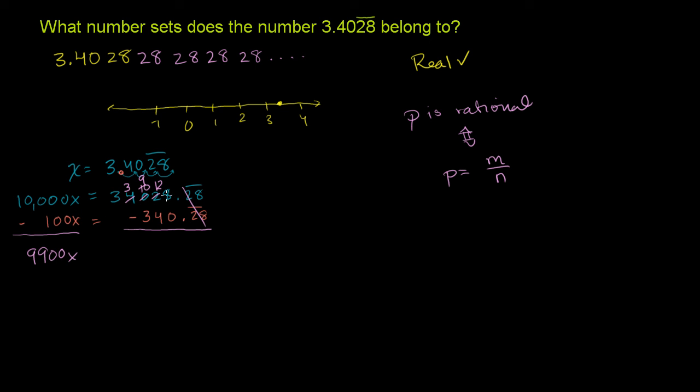And now we can do the subtraction. 8 minus 0 is 8. 12 minus 4 is 8. 9 minus 3 is 6. 3 minus nothing is 3. So 9,900x is equal to 33,688. We just subtracted 340 from this up here. So we get 33,688.